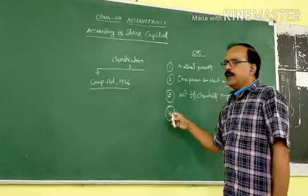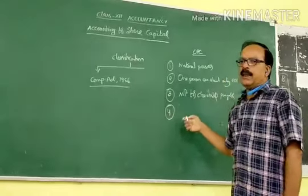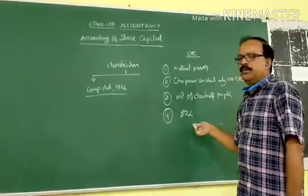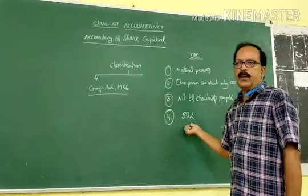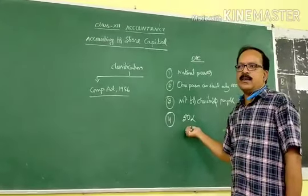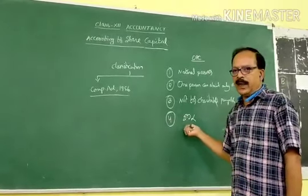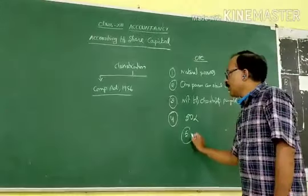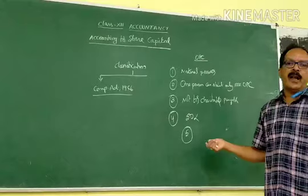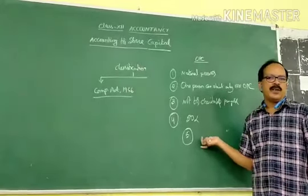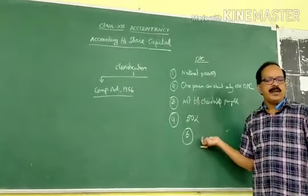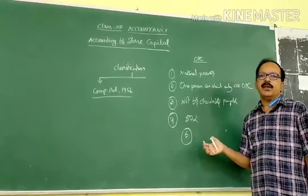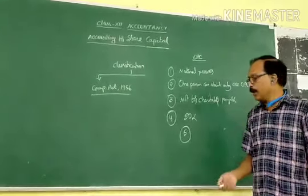The capital of the OPC should not exceed 50 lakhs. Then, the last feature of OPC is that the average turnover of the three years of the company should not exceed two crore rupees.